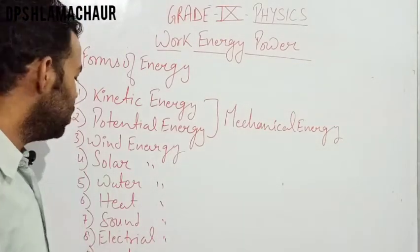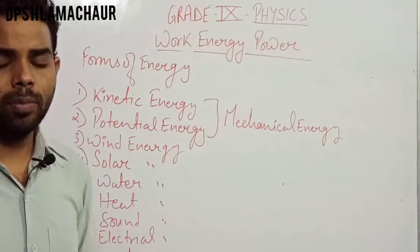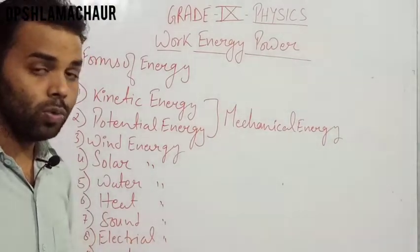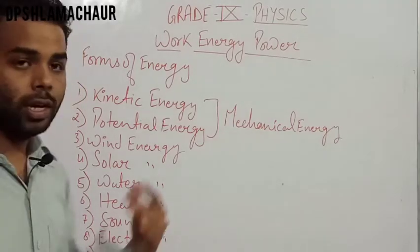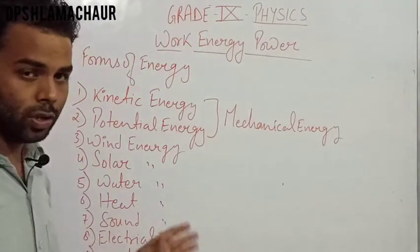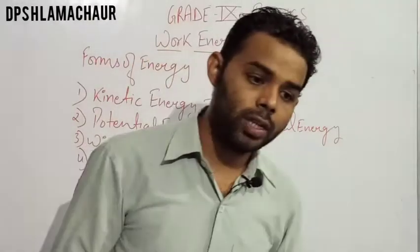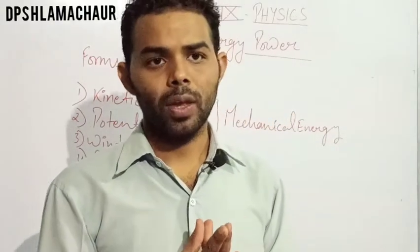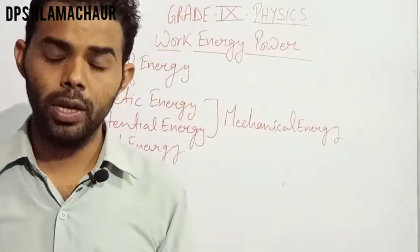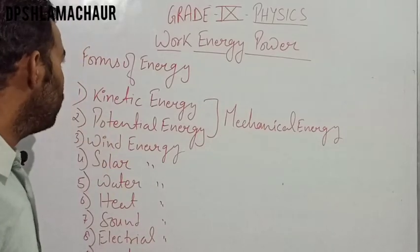Sound energy is the energy produced with the help of sound. Electrical energy powers all electronic devices like lights and fans. Nuclear energy is a very important and advanced form of energy — we have nuclear power plants in our country that generate electricity with the help of nuclear energy. These were the different forms of energy.